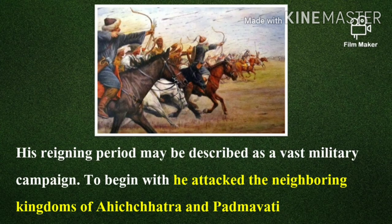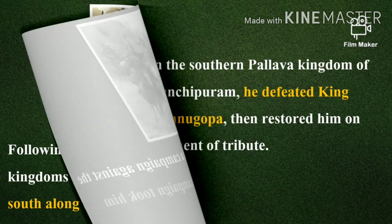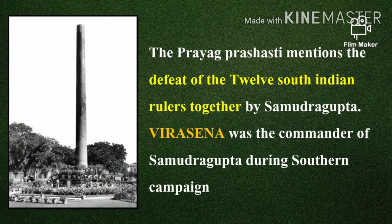Samudra Gupta had a vast military campaign. To begin with, he attacked the neighboring kingdoms of Achitatra and Padmavati. Following this, Samudra Gupta began a campaign against the kingdoms to the south, taking him south along the Bay of Bengal. In the Pallava kingdom of Kanchipuram, he defeated the king Vishnu Goppa, then restored him on the payment of tribute. The Prayag Prashasti mentions the defeat of 12 South Indian rulers by Samudra Gupta. Veer Sena was the commander during this southern campaign.